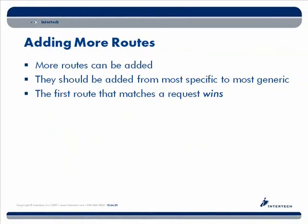You can add as many routes as you want to your Global.asax file, but they must be added in a specific order — from the most specific routes to the most generic, which act as safety nets and catch-alls. Keep in mind that when a request comes into the server, the first route that matches the request wins, and that's where the user is navigated.